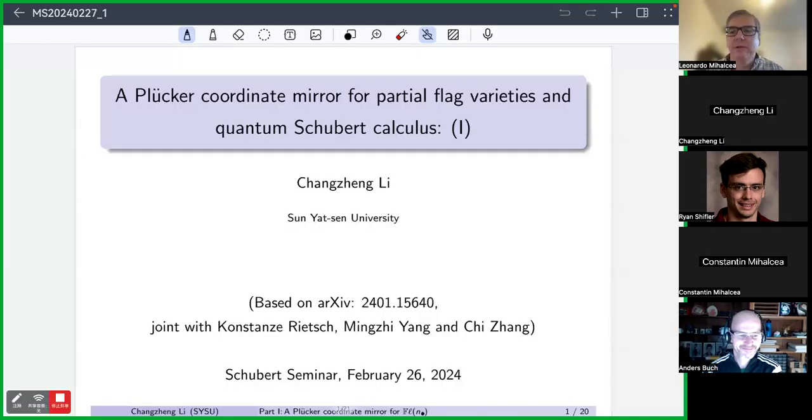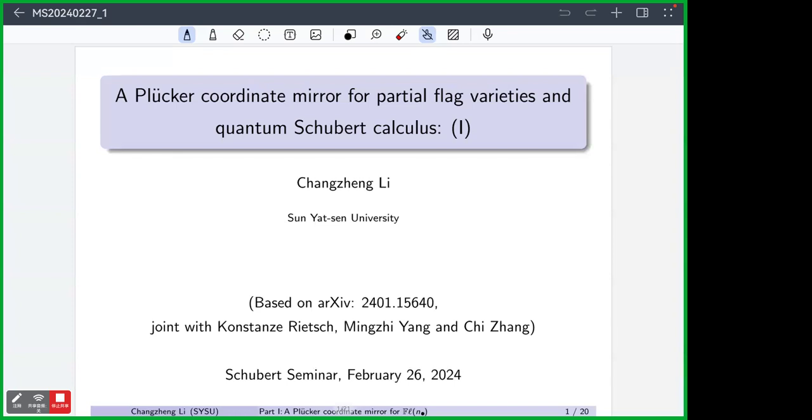All right, so welcome everyone to the Schubert seminar. Today we're happy to have Changzheng Li from Sun Yat-sen University telling us about the Plucker coordinate mirror for partial flag varieties and quantum Schubert calculus. So please take it away, Changzheng. Okay, so maybe I just start. First I would like to thank the organizers of the seminars for the invitation and thank Leonardo for the introduction. This is my recent work with Konstanze Rietsch, Mingzi Yang, and Chi Zhang. This work shows some interaction between mirror symmetry and quantum Schubert calculus.